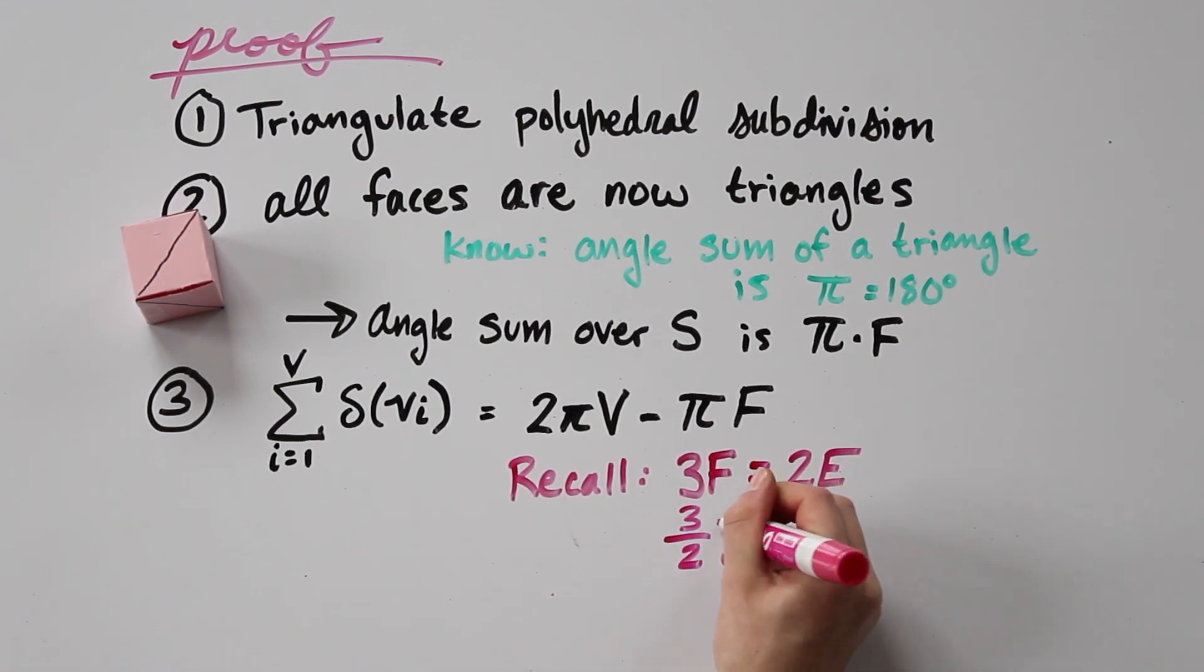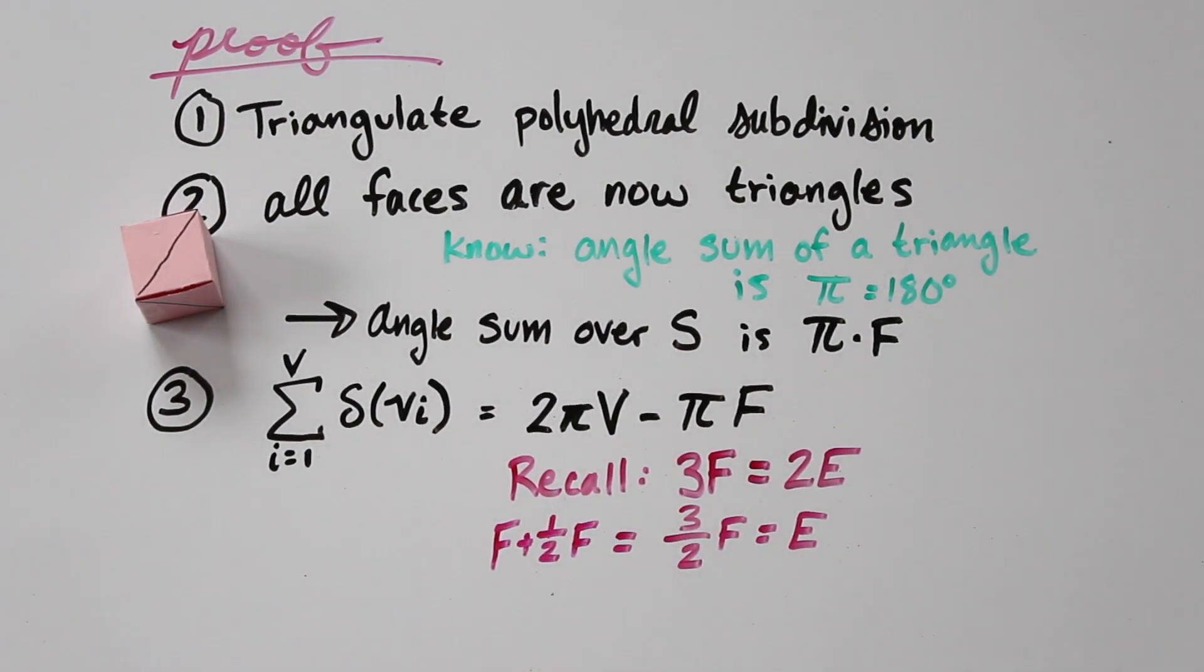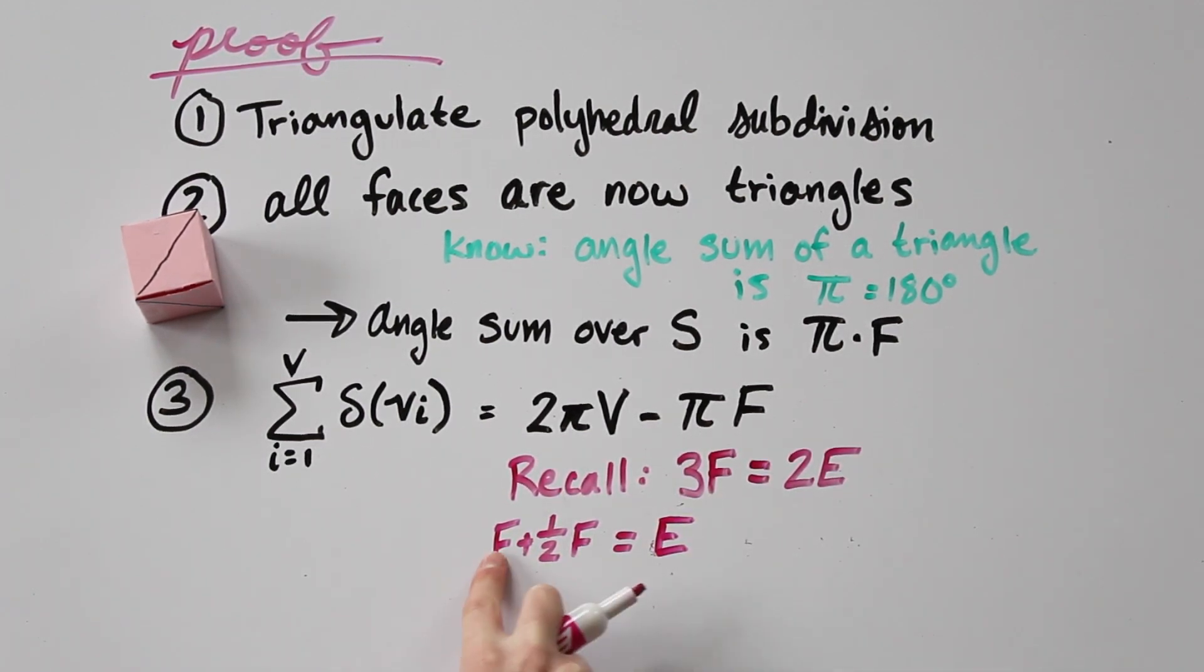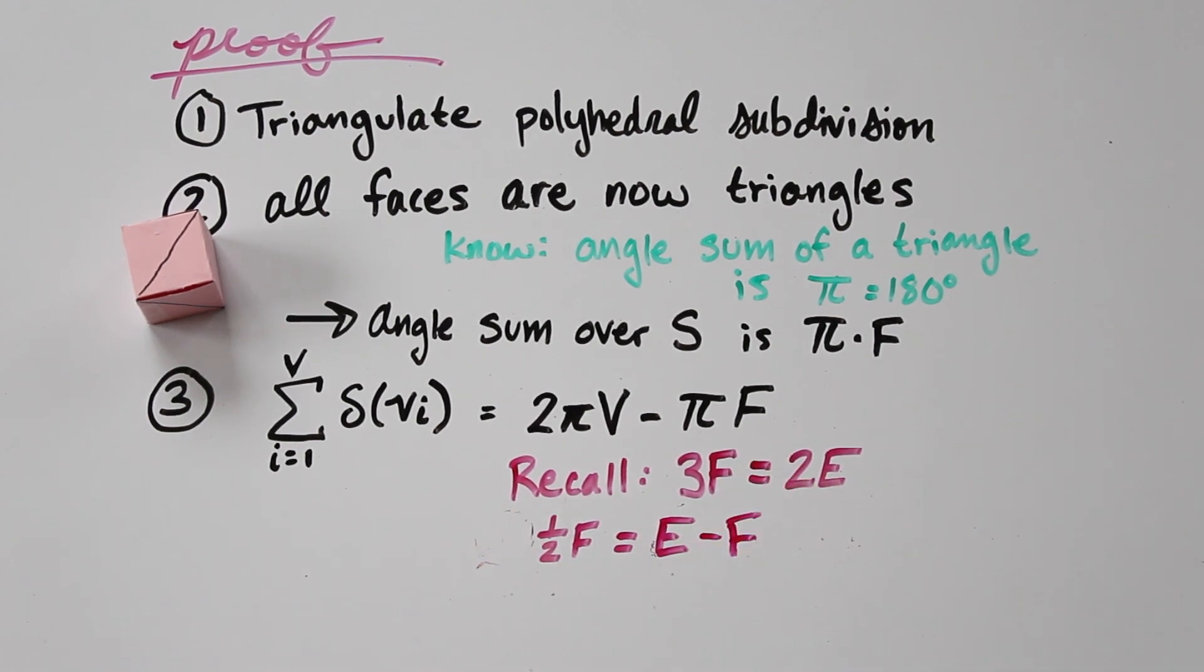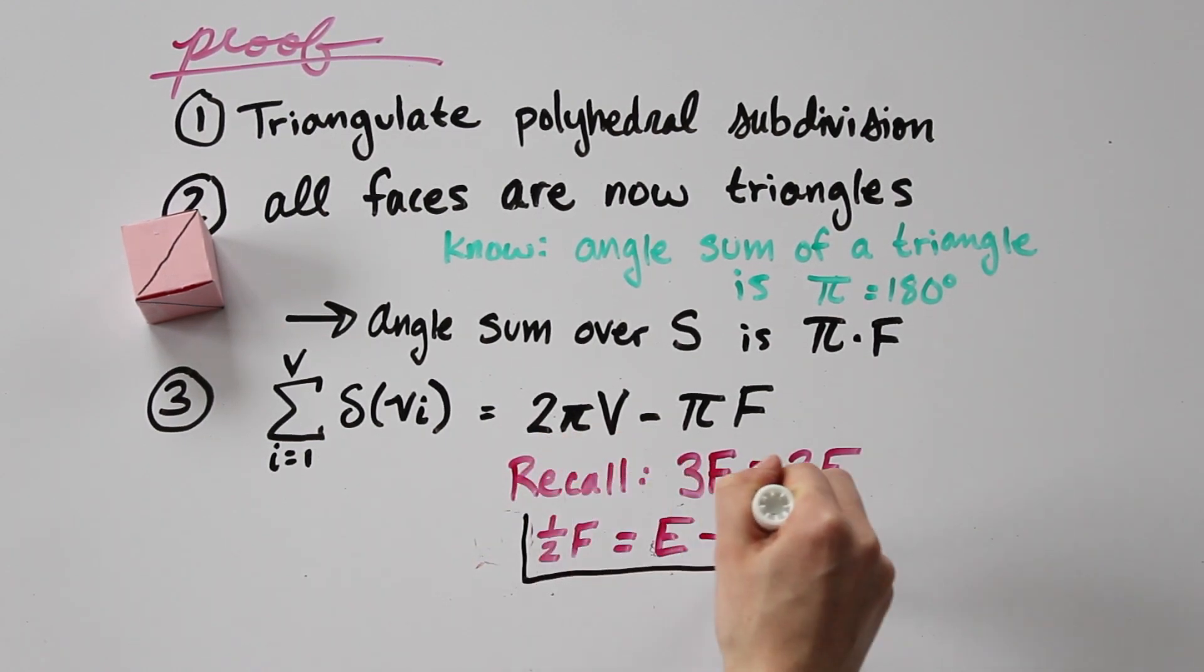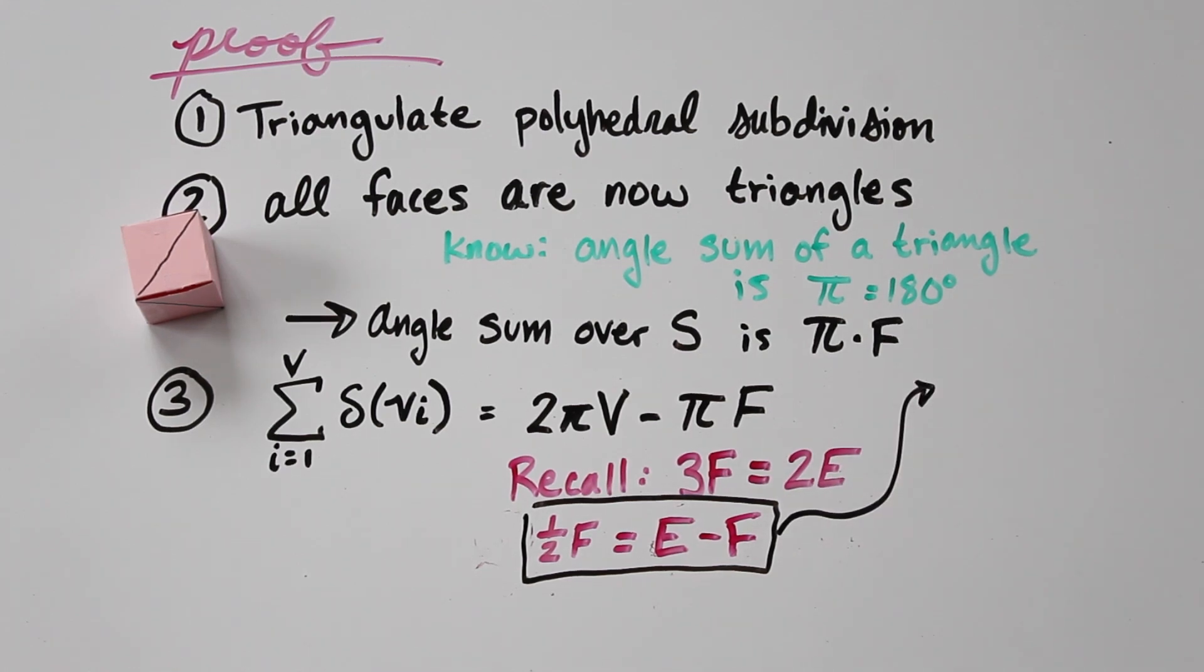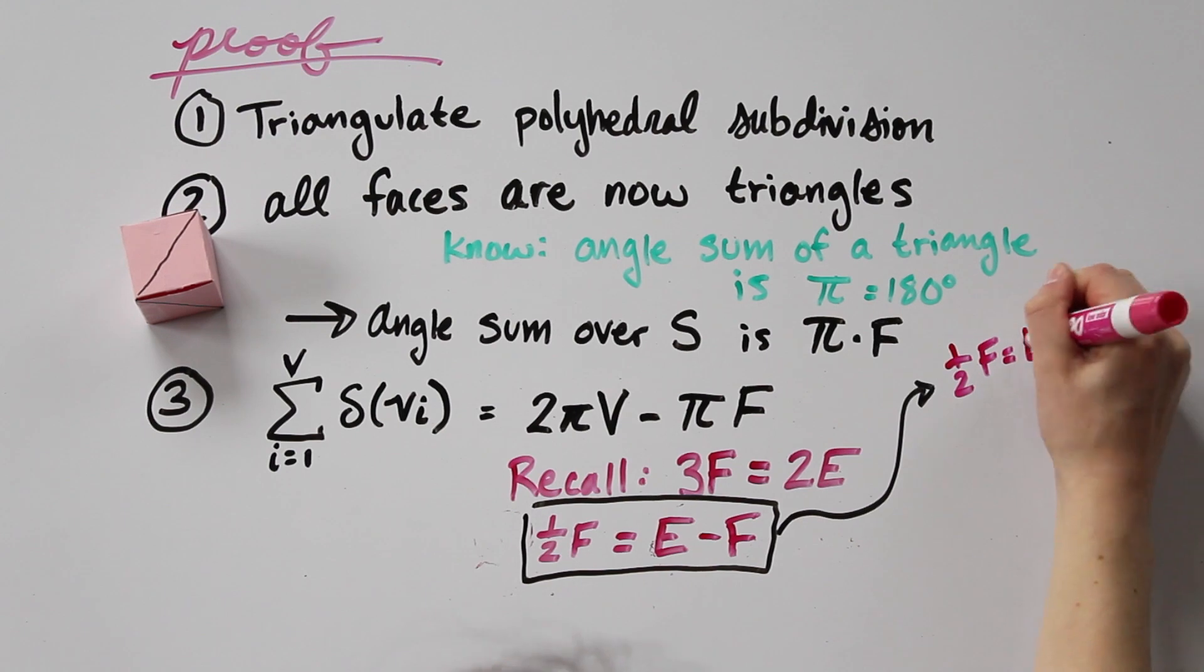Then doing some algebraic manipulation, we have 3/2 F is E and 3/2 F is the same as F plus 1/2 F. And so we see that 1/2 F is the same as E minus F. We're going to hold on to that fact for right now and use it in just a minute.